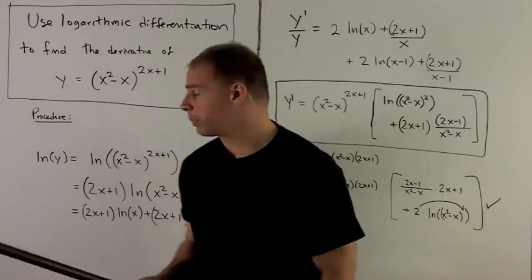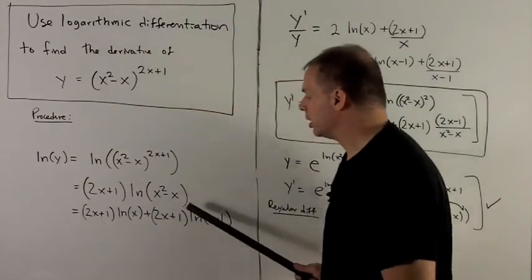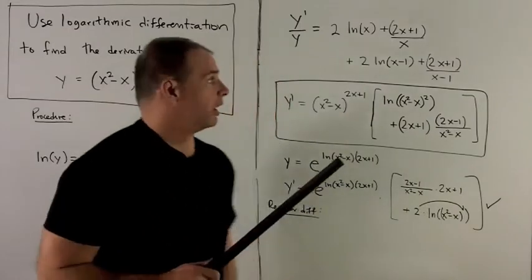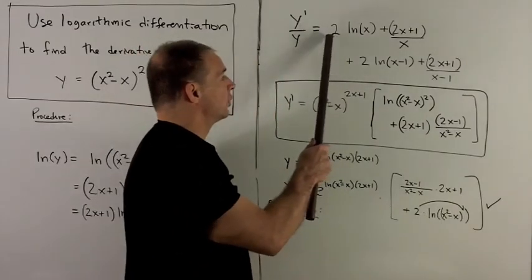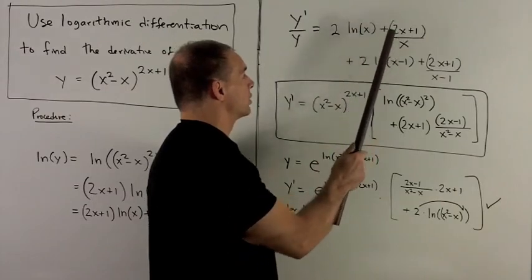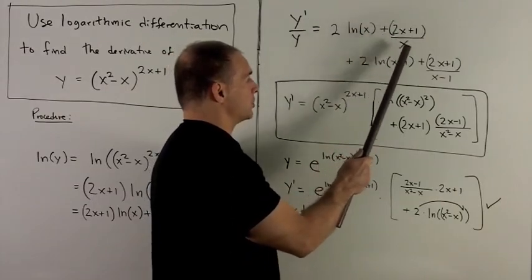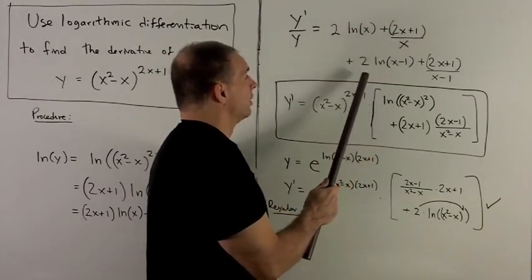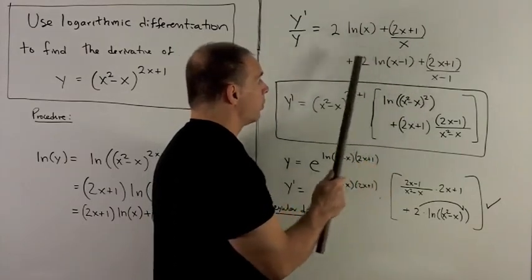Next, we're using the product rule on each term here. So we're going to wind up with derivative of the first is 2 times natural log of x plus the first times the derivative of the natural log of x, which is x.